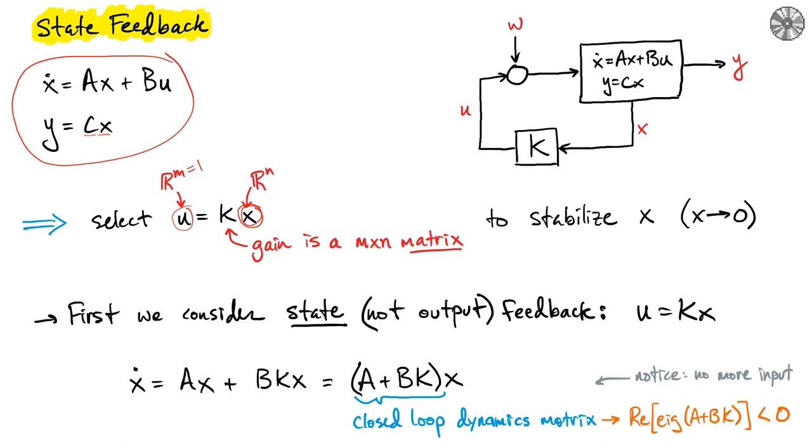And so the first thing that we're going to consider is dealing with the state x. Now what we're going to observe is that oftentimes we cannot see all of the state of x. So for example we have a sensor that may measure the displacement but not the velocity of an element of our system.